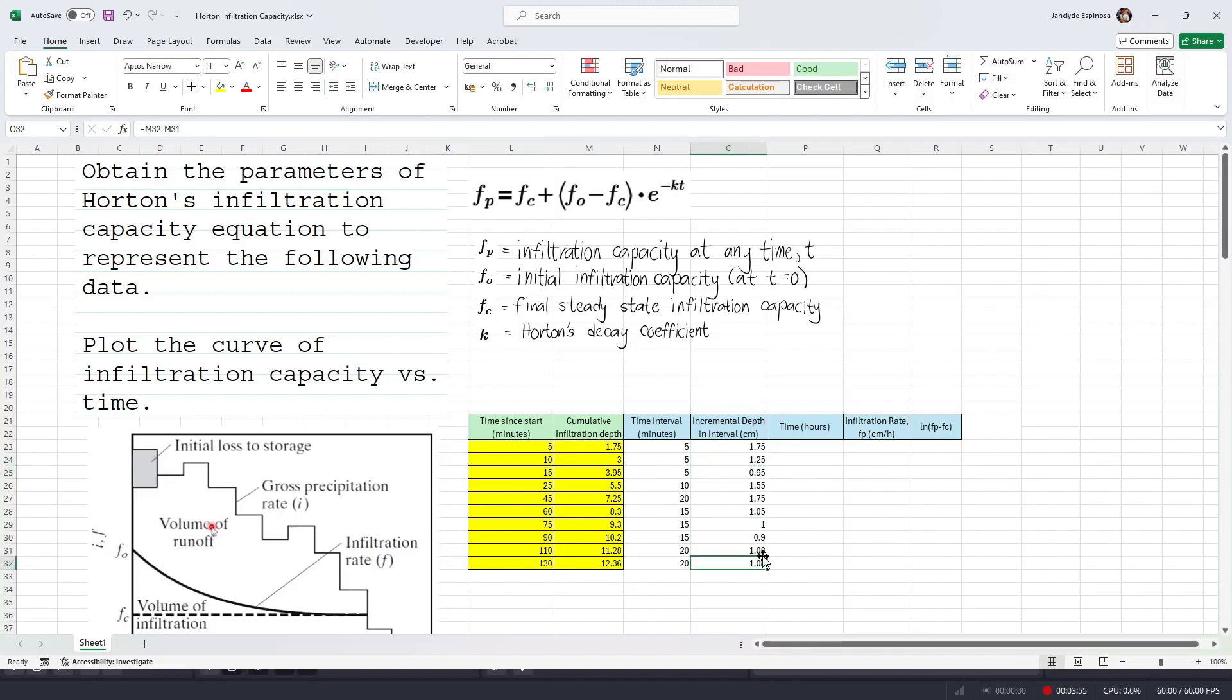Now, we're gonna convert the time since start into hours. But first, notice here that the incremental depth for the last two rows are the same, as well as the time interval for the last two rows along the time since start column. This means that at this point, the infiltration rate will practically be constant. We will see that later once we compute the infiltration rate. And so, to convert the time since start into hours, we're gonna divide it by 60. And then just double-click or drag it down.